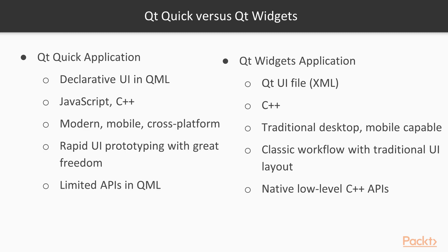A Qt Quick application might sound like an alien, but it is built on top of familiar Qt technologies. The differences between the two are mostly because of the declarative QML. In Qt Quick, the UI is written in QML, though you can also design it in Qt Designer.